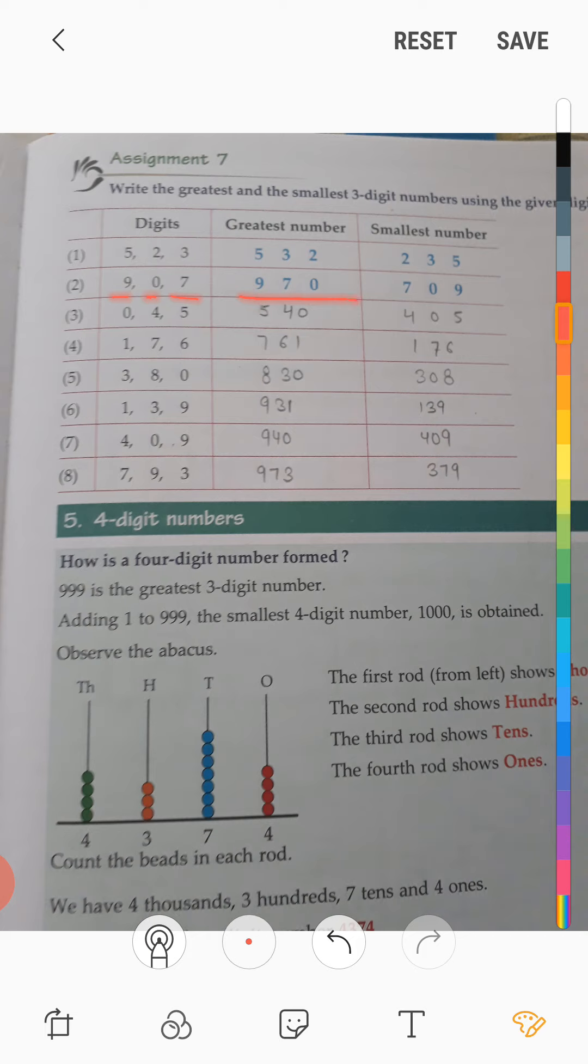Next step, smallest number. Smallest number means ascending order. Simple digit 5, 2, 3. Smallest digit ascending, smallest to biggest. Smallest digit is 2, so first of all.